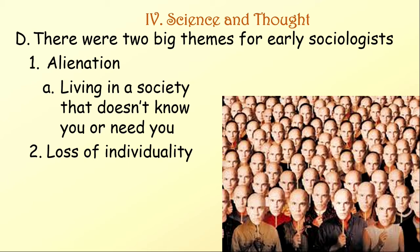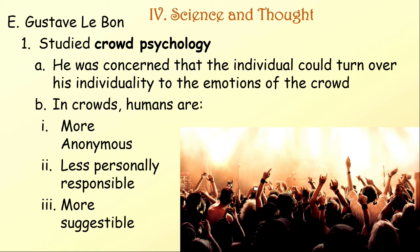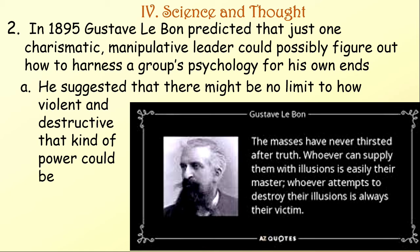There were two big themes for early sociologists. Number one: alienation — living in a society that doesn't know you or need you. And two: the loss of individuality. Gustave Le Bon studied crowd psychology. He was concerned that the individual could turn over his individuality to the emotions of the crowd. In crowds, humans are more anonymous, less personally responsible, and more suggestible.